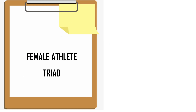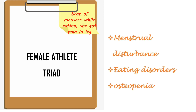Next one: female athlete triad. Because of her menses, while eating, she got pain in her leg. Menses refers to menstrual disturbance, while eating refers to eating disorders, and pain in leg refers to osteopenia. So menstrual disturbance, eating disorders, and osteopenia — female athlete triad.